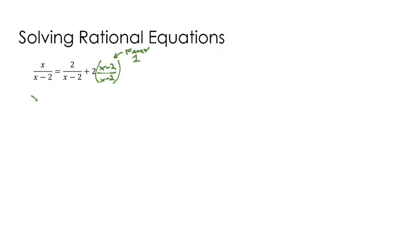So let me rewrite what we have. We have x over x minus 2 equals 2 over x minus 2 plus, and this is really like a 2 over a 1, so that's like 2 times x minus 2 all over x minus 2.